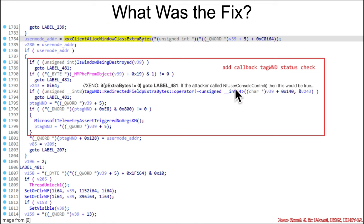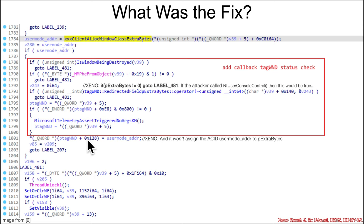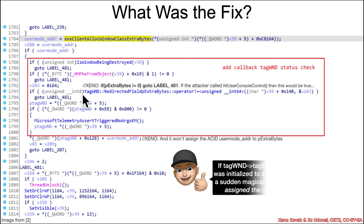If pExtraBytes is not equal to zero, go to label 481. So if the attacker played their game by calling NtUserConsoleControl in between when this called into user space and when it returned — then pExtraBytes would not be equal to zero, because NtUserConsoleControl did a kernel-based allocation and assigned that to pExtraBytes. So the attacker playing their game means it's non-zero, you jump to label 481. That defends against the attack because the actual assignment of the attacker-controlled value into pExtraBytes is skipped.